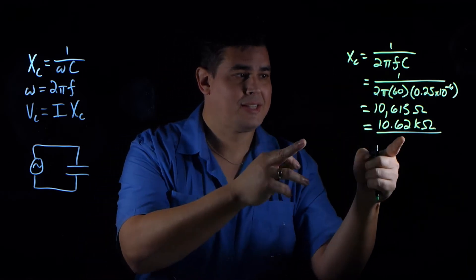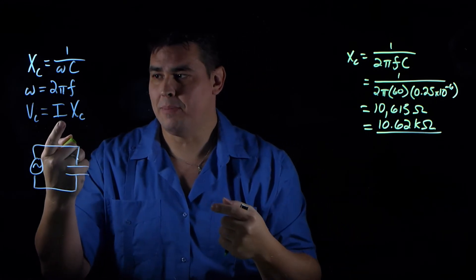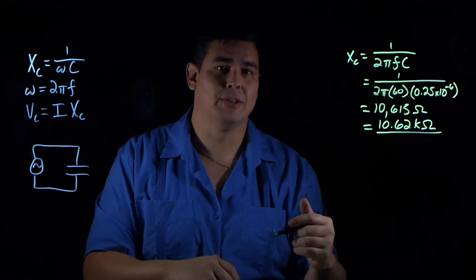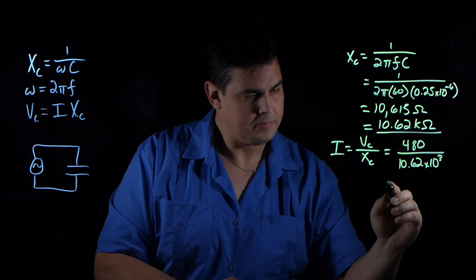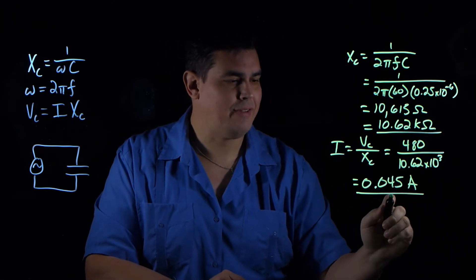So now let's take that reactance and come over here and use our Ohm's Law version and figure out what the current would be because I know the voltage across the capacitor. So when I do that, I get 0.045 amps.